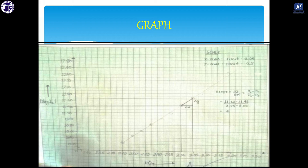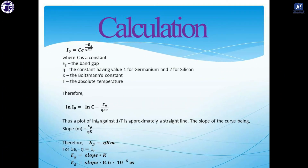You have to plot a slope, marking points A, B, C. To calculate the band gap, the formula is: I₀ = C · e^(−EG / ηKT). Taking the natural log on both sides gives ln I₀ = ln C − EG/(ηKT), which simplifies so that EG/(ηK) is the slope.